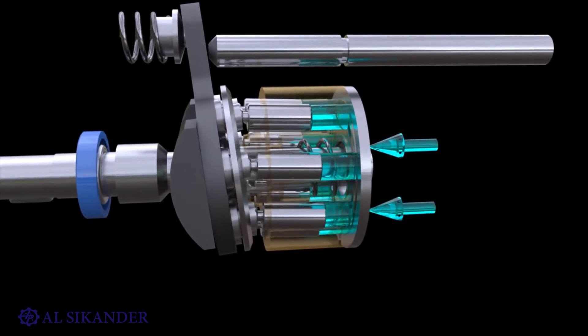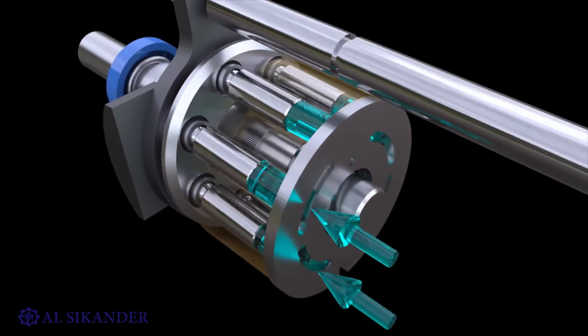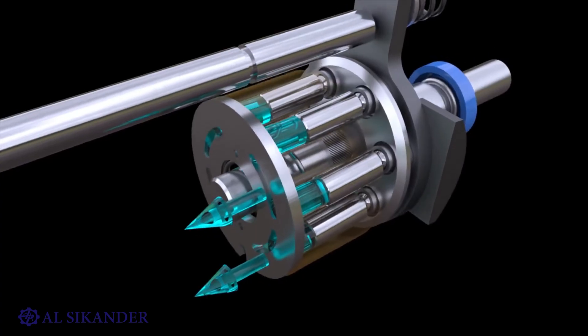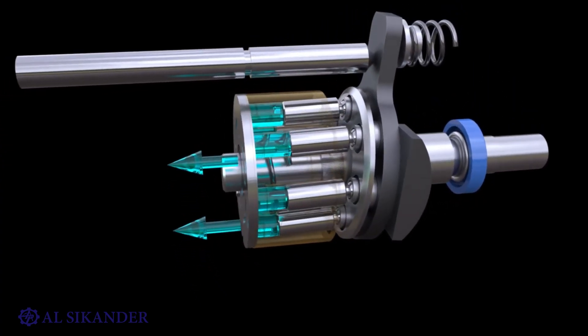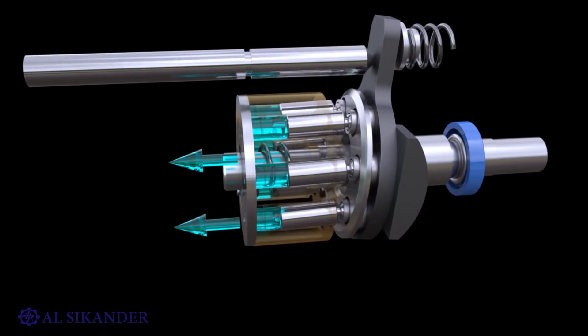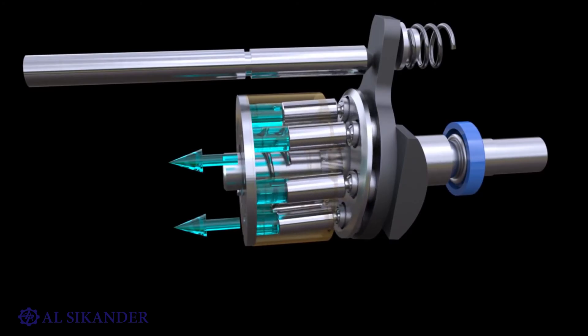When the block rotates, the pistons are in reciprocating motion. As the pistons move to increase the volume of the chamber, they are connected to the suction line. When the pistons move in the opposite direction, reducing the chamber volume, they are connected to the discharge line.